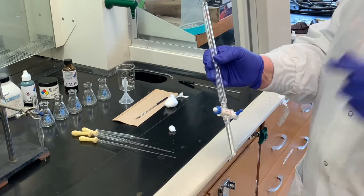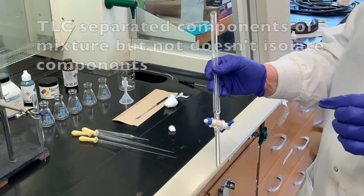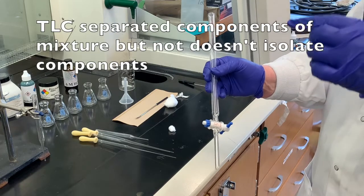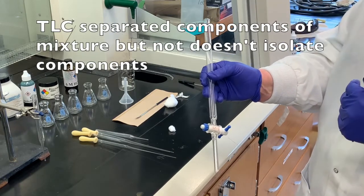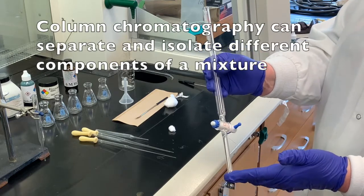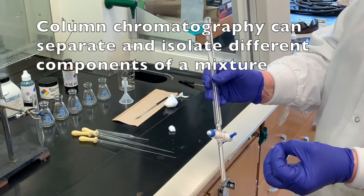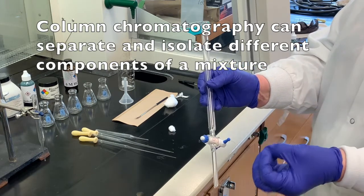And if we took that, we couldn't actually isolate any of the material. We could see the different components there, but we didn't really isolate anything. By using column chromatography, this allows us to actually collect the samples that we're trying to separate within that mixture.